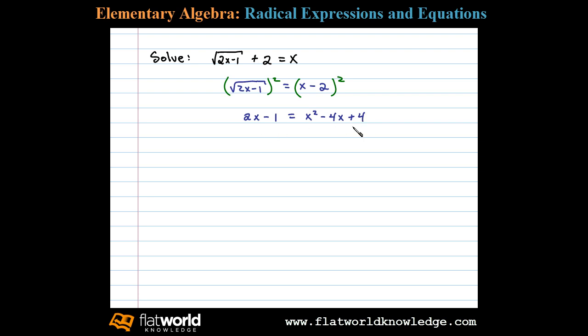Now this is quadratic. To obtain standard form we subtract 2x on both sides and add 1 on both sides. In this case we get 0 equals x squared minus 6x plus 5.